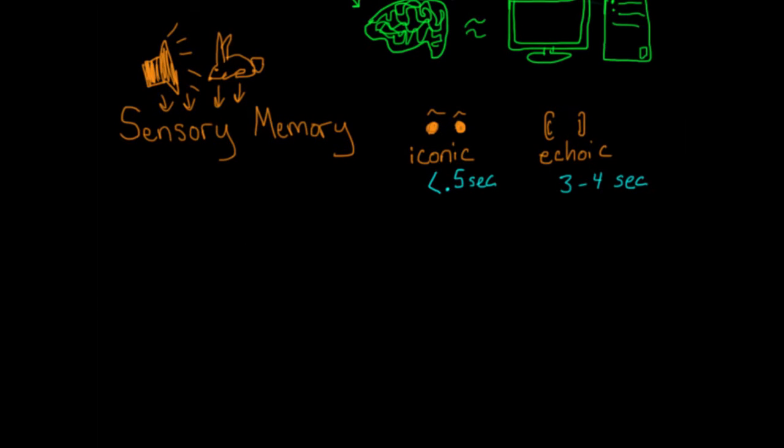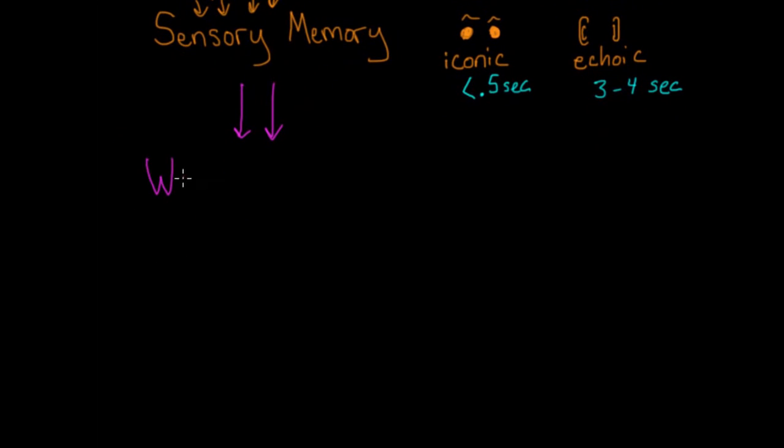So we have a ton of information coming into our sensory memory, but we can't possibly process all of it. We decide what to pay attention to, and that gets passed along into working memory to be processed. Working memory is just whatever you're thinking about right at this moment. It's also called short-term memory, but we're going to stick with working memory because that's what most psychologists call it.